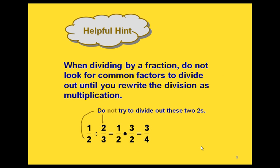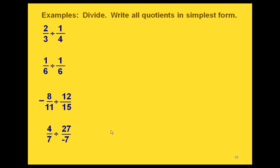One very important thing to think about when you're dividing fractions is that you can't look for common factors to divide out until you've rewritten the problem as multiplication. That's why the first step is to rewrite the problem as a multiplication and flip over your fraction. If you tried to do this problem by dividing out the 2's first, you would get the wrong answer. So just remember that the first step is to rewrite the problem as a multiplication.